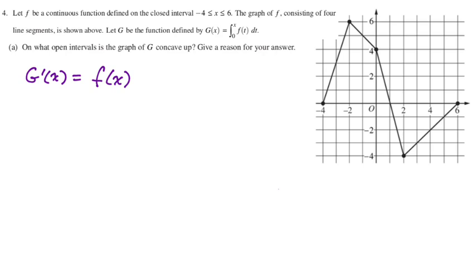I know that g is concave up wherever its derivative is increasing, so when g prime, which is f(x), is increasing, that's where we're concave up, so right here and right here. So I'm just going to write that up. g(x) is concave up on the intervals negative 4 to negative 2, and also from 2 to 6.